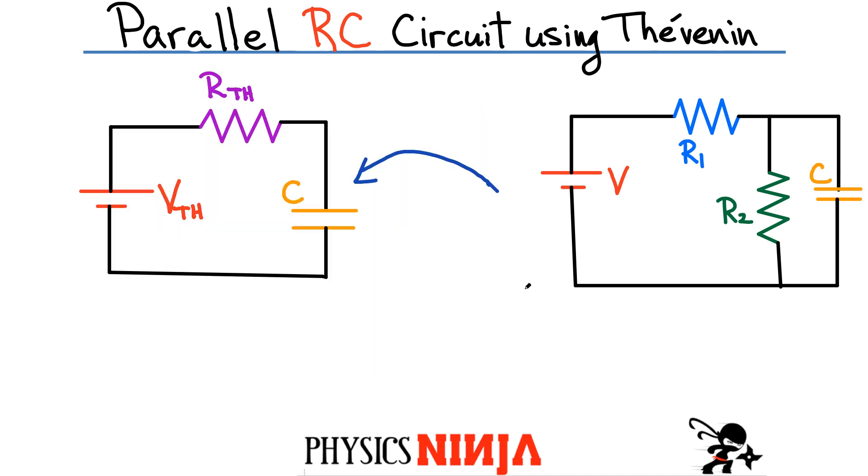Okay, so we start off with the network here on the right-hand side. I've got one battery, I've got two resistors, and I have one capacitor that is in parallel with the resistance R2. And the goal now is to find what is this current here flowing through the capacitor. And imagine when I just first close the switch over here. So what is this current here as a function of time? And also what is the voltage across the capacitor as a function of time?